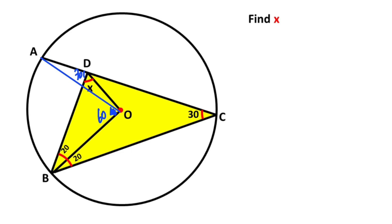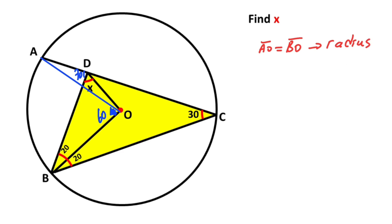We know that line AO and line BO are also radii. So line AO and line BO are equal — these are both radii. I want to represent these two equal sides with a circle sign.